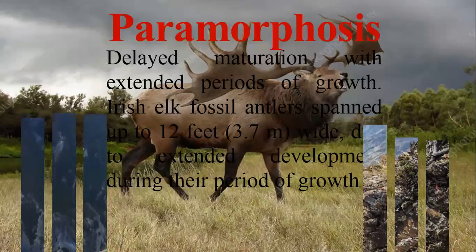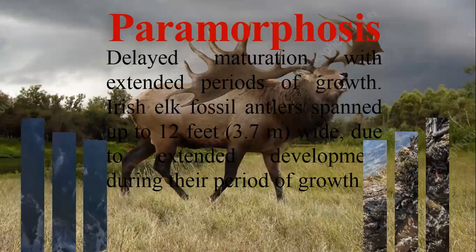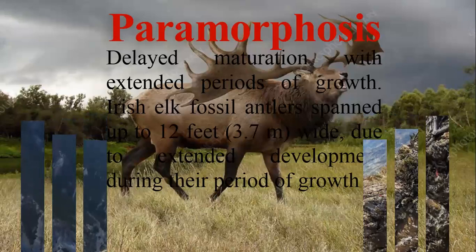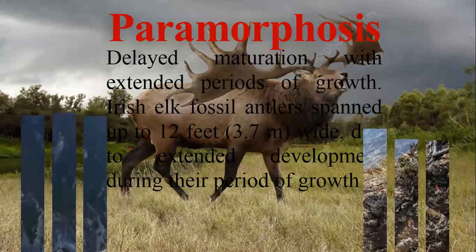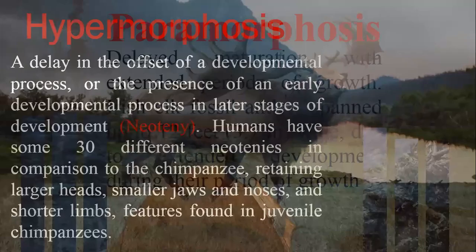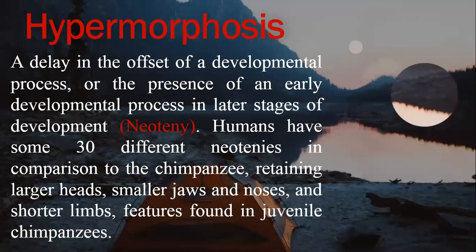As you can see in this picture, the Irish elk in the fossil record grew to 12 feet or 3.7 meters wide through extended development during its growth period. This is an example of delayed maturation — where the growth and maturation period is extended and delayed compared to related animals.